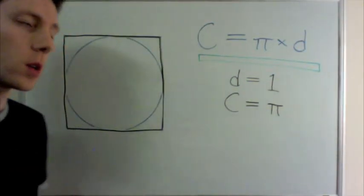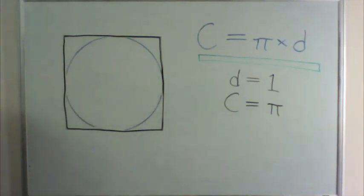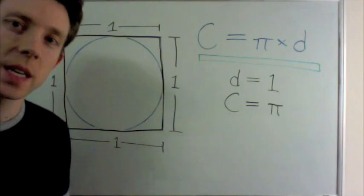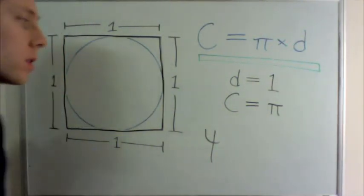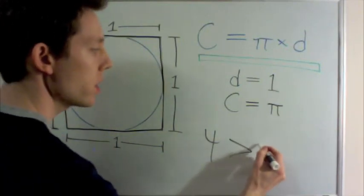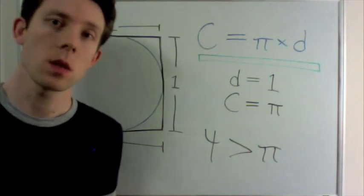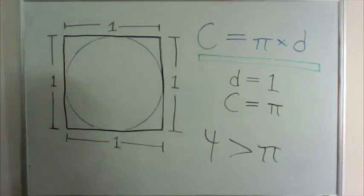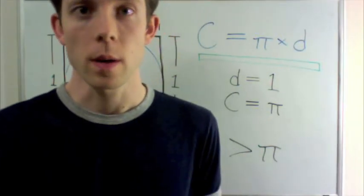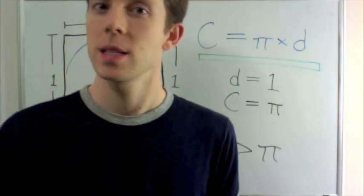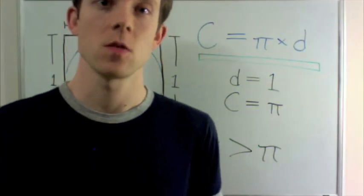If I draw a square around a circle with diameter 1, then each side of the square is length 1, and if I add up the sides here, I get 4, and clearly the square is outside the circle, so I can see that 4 is greater than the circumference, which is PI. So now I know that PI is greater than 3 and less than 4. The pictures I drew show that PI is between 3 and 4. Mathematicians started with ideas like this and used more and more complex pictures and ideas to find more precise values of PI.